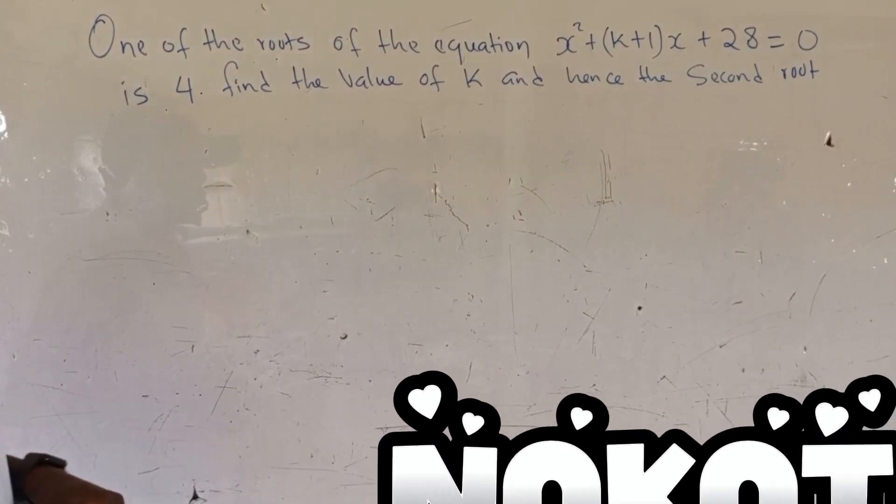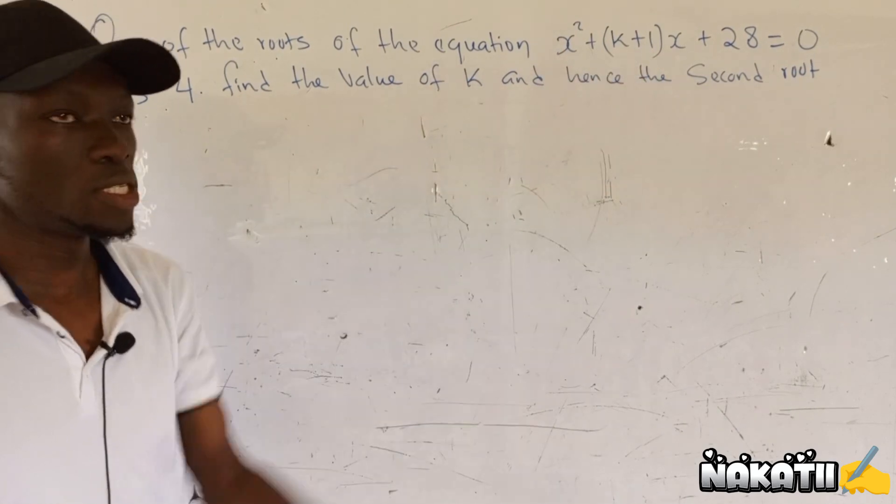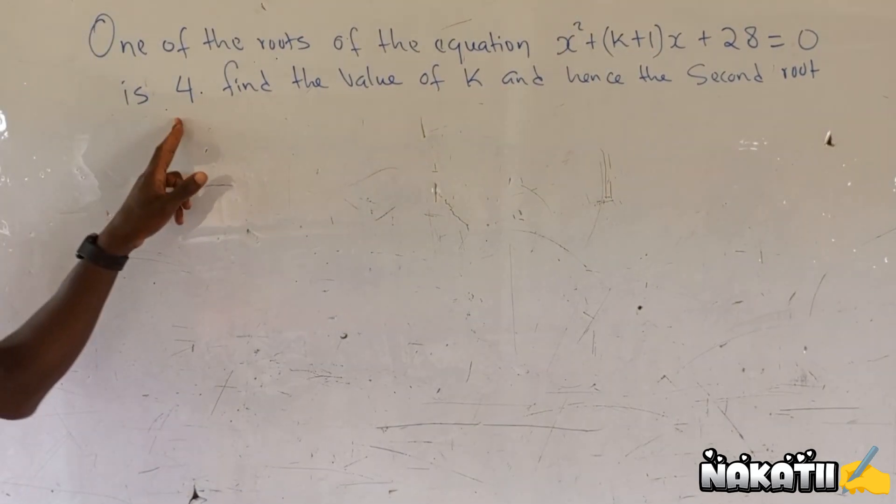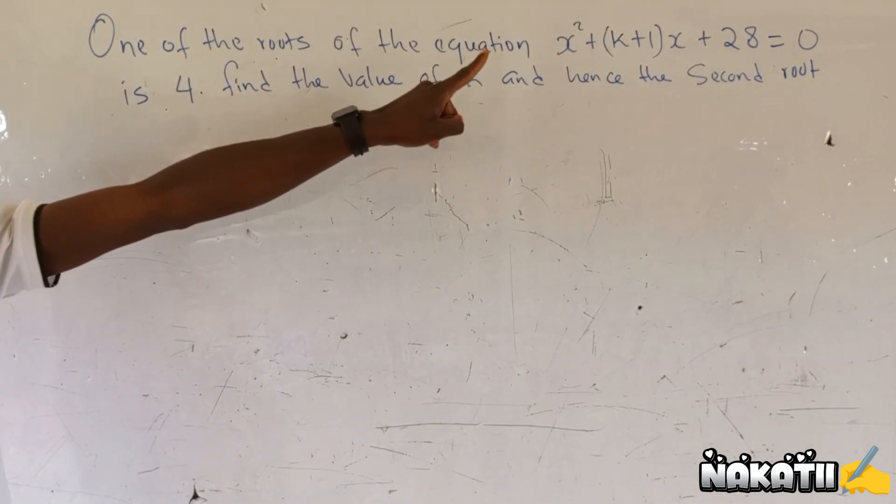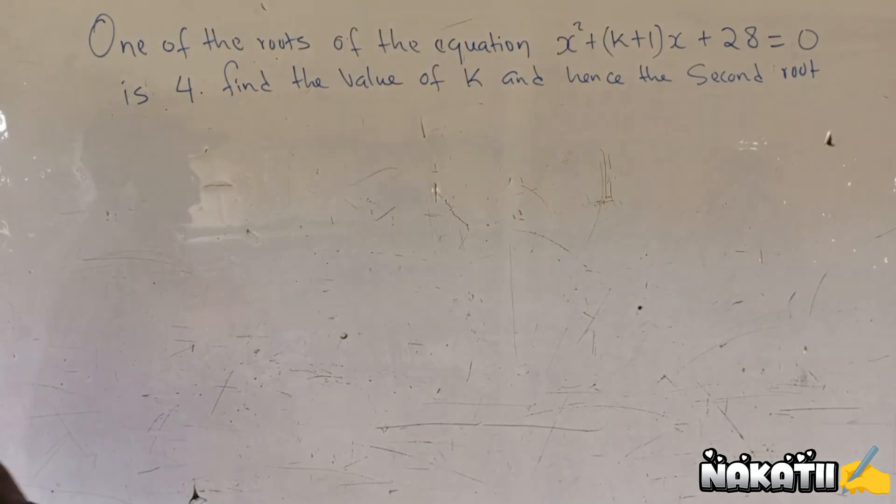One of the roots of the equation x plus k plus 1 in bracket x plus 28 equals 0 is 4. So one of the roots of this quadratic equation is given as 4. Find the value of k and hence the second root.